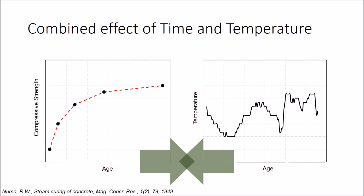In 1949, Nurse proposed that one can correlate the strength development of concrete to the product of temperature and time. However, he did not account for the datum temperature effect, and he did not measure the concrete temperature — instead, he measured the temperature of the curing chamber. In 1951, Saul introduced the term maturity, correlated with the product of time and temperature, and incorporated the effect of datum temperature in his studies.